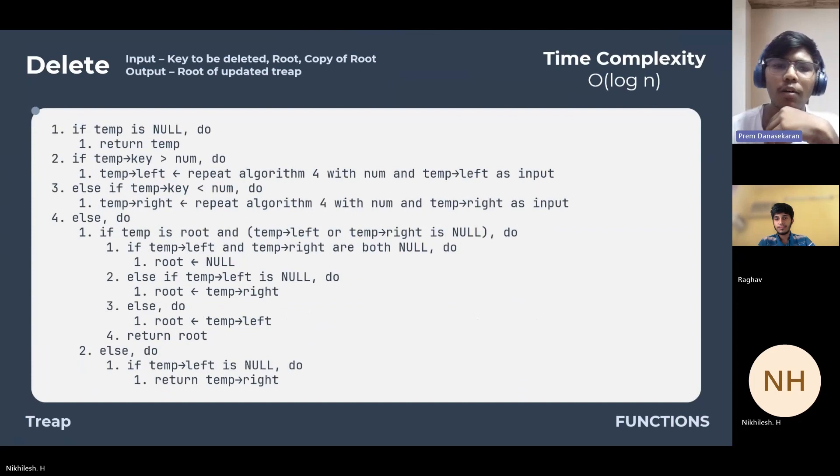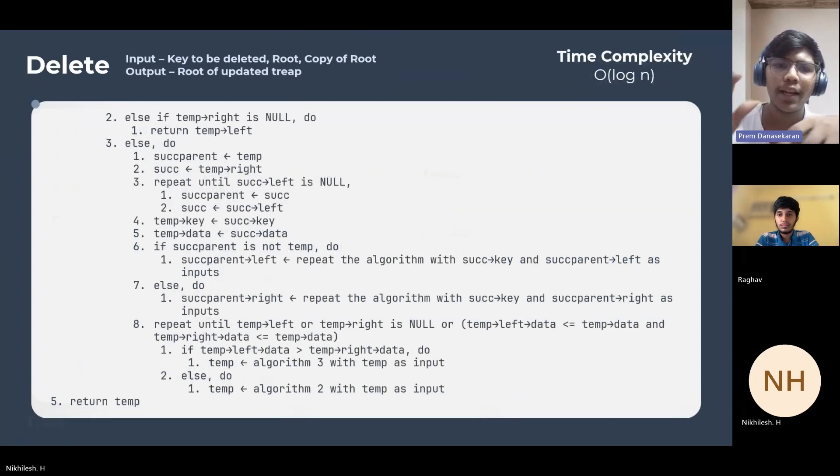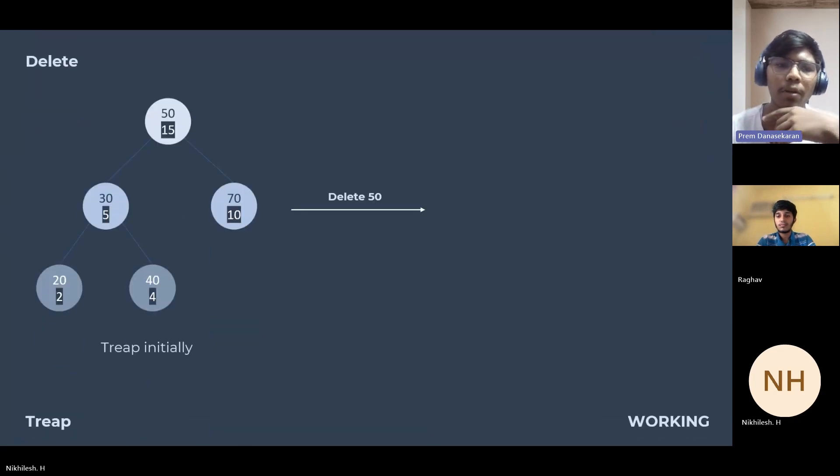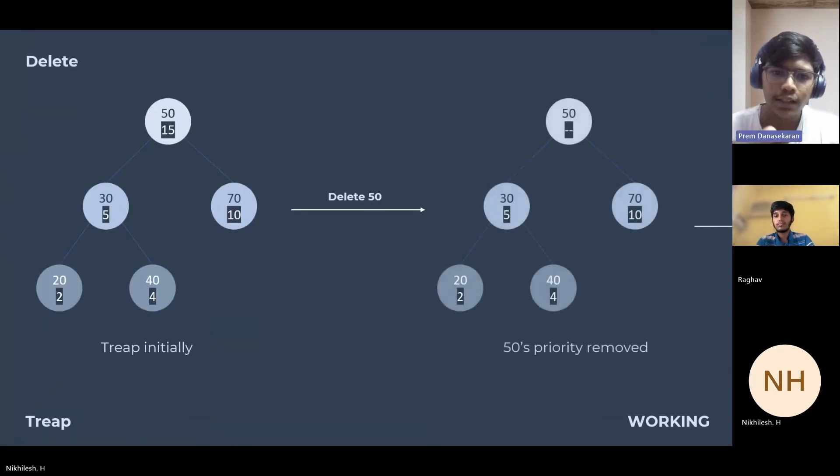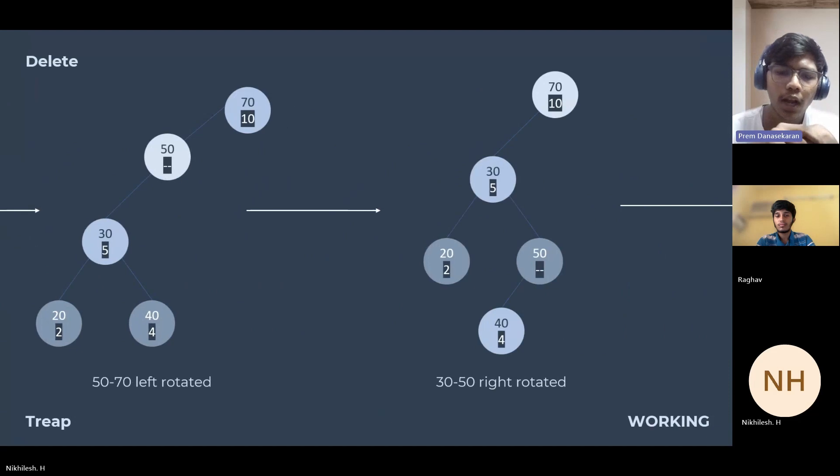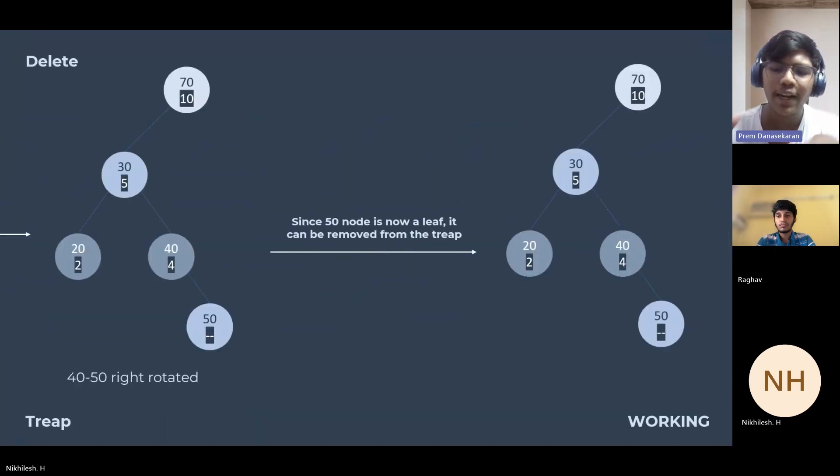Next we will see about deletion, where we initiate a recursive search through the tree using the provided key value. This search locates the corresponding node in the tree, adhering to the binary search tree property. Subsequently, we perform rotations on the subtree to ensure the maintenance of the heap property. Ultimately, through a series of value swaps, we transform the identified node into a leaf node, thus removing it from the tree. The time complexity of this operation is O(log n). For example, we delete 50. First the priority is removed, then rotations are performed and they are brought into a leaf node and finally deleted from the tree.